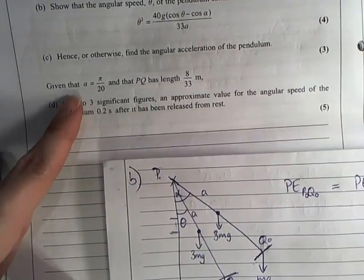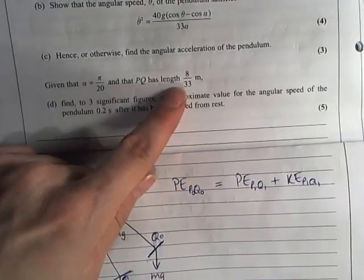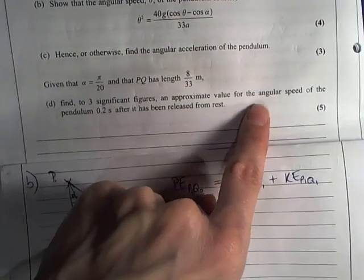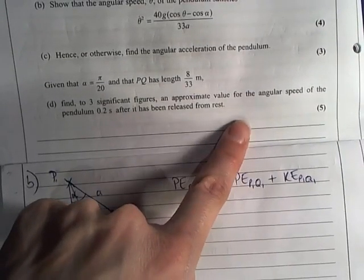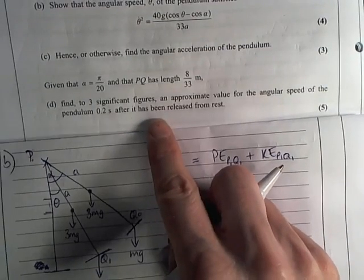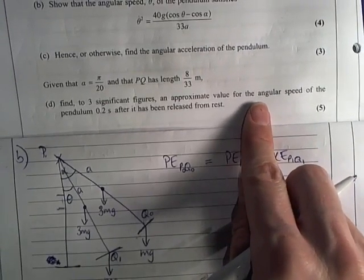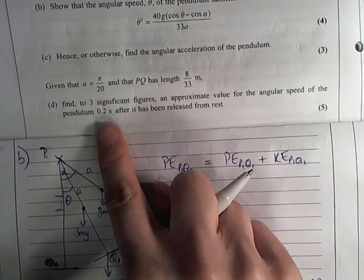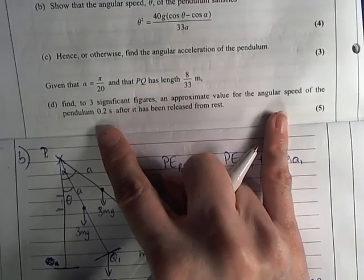Anyway, given that alpha is pi over 20 and PQ has length 8 over 33, find to three significant figures an approximate value for the angular speed of the pendulum 0.2 seconds after it has been released from rest. So I need to find a value for theta dot. And I need to look at the relationship between time and the angular speed.